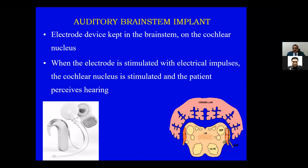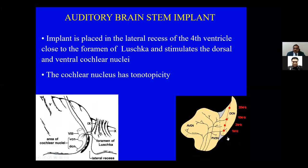When the implant is kept in the brainstem and stimulated, the electrical impulses stimulate the cochlear nucleus and give the patient a sensation. As you can see in this diagram, there is a dorsal cochlear nucleus and a ventral cochlear nucleus. The ventral cochlear nucleus is further divided into an anterior ventral cochlear nucleus and a posterior ventral cochlear nucleus. Since we approach from anterior to posterior, we first reach the posterior and then the anterior ventral cochlear nucleus as the electrode goes deeper.